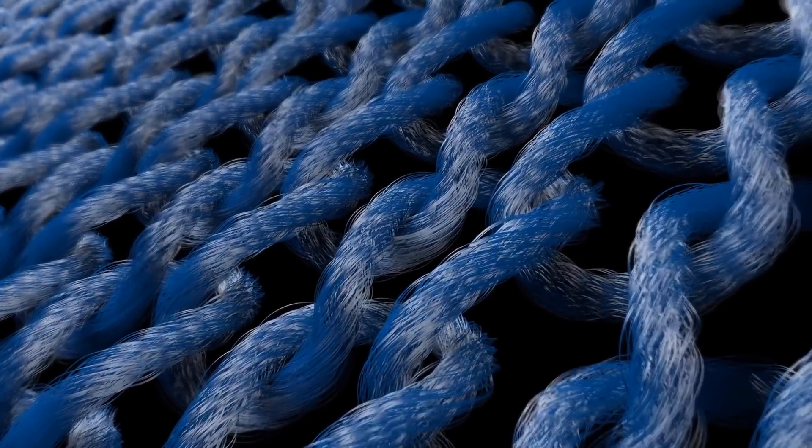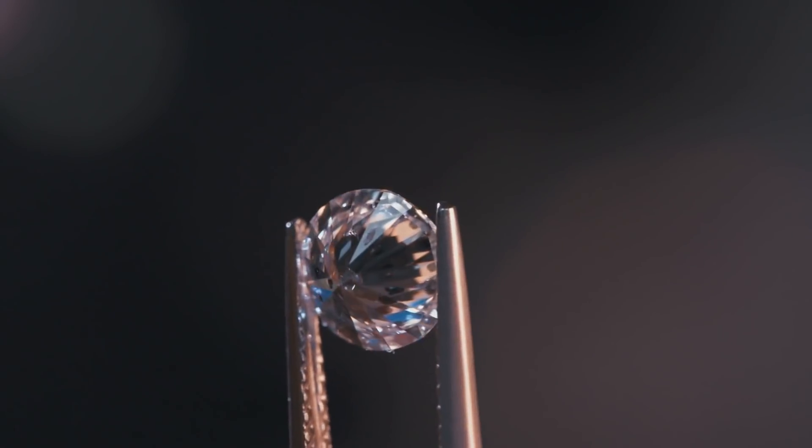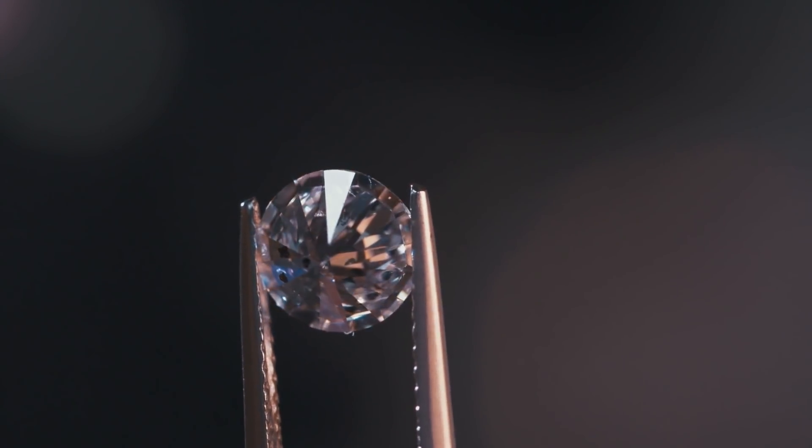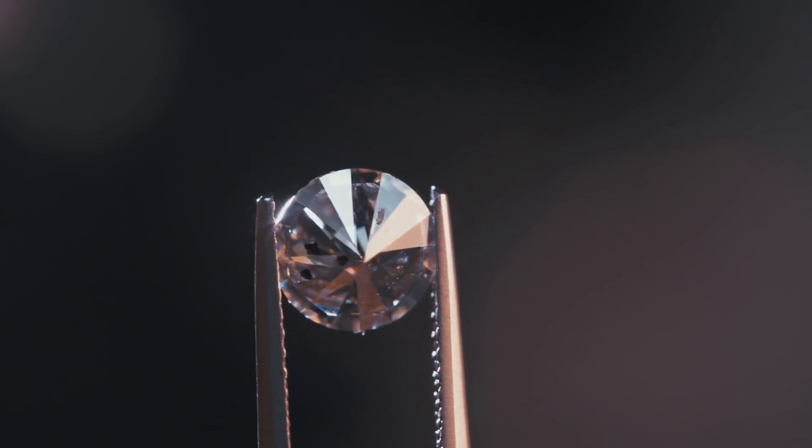As an example, imagine reorganizing the atoms in graphite to engineer a diamond. The value of diamonds would probably go down, but only because so many more things would be made of this famously robust ingredient.